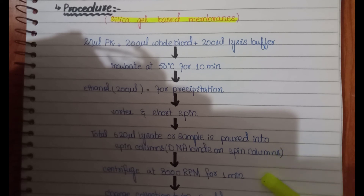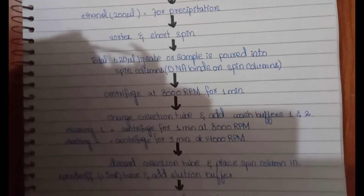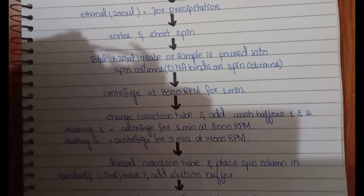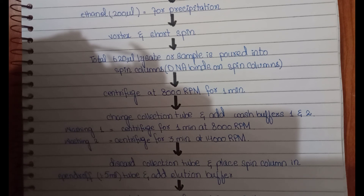The lysate is centrifuged at 8000 rpm for about 1 minute. After that we change the collection tube and add wash buffers for washing of the DNA. After adding wash buffer 1, we centrifuge for about 1 minute at 8000 rpm. After centrifugation, we discard the supernatant and the pellet is retained in the collection tube.